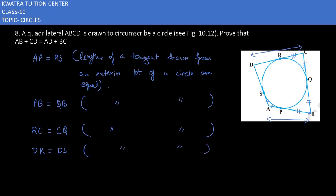Then what you can do is add the left side and you can add right side. So it will be AP plus PB plus RC plus DR on left hand side, and right side AS, QB, CQ, and DS. So if you add AP and PB then you will get AB. RC and DR then you will get CD. AS and DS then you will get DA, and QB and CQ then you will get BC.